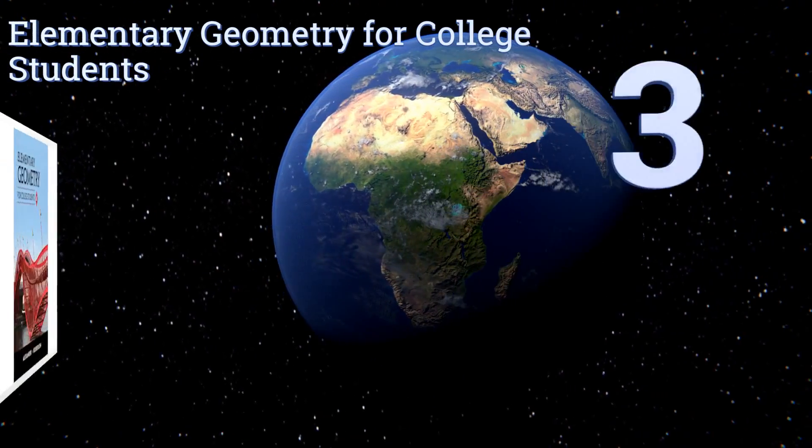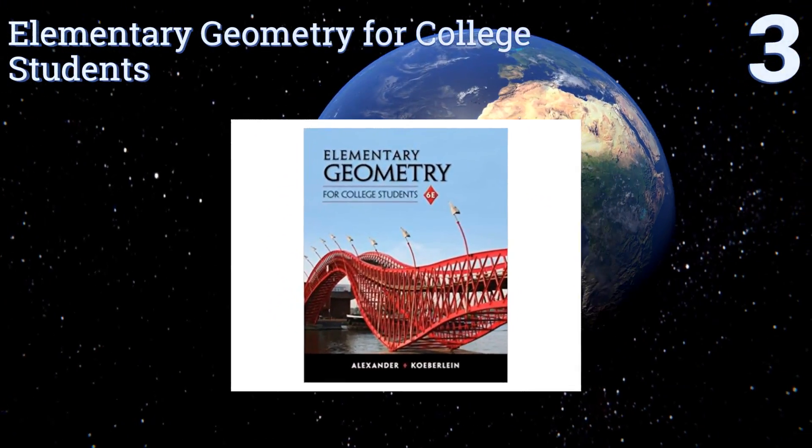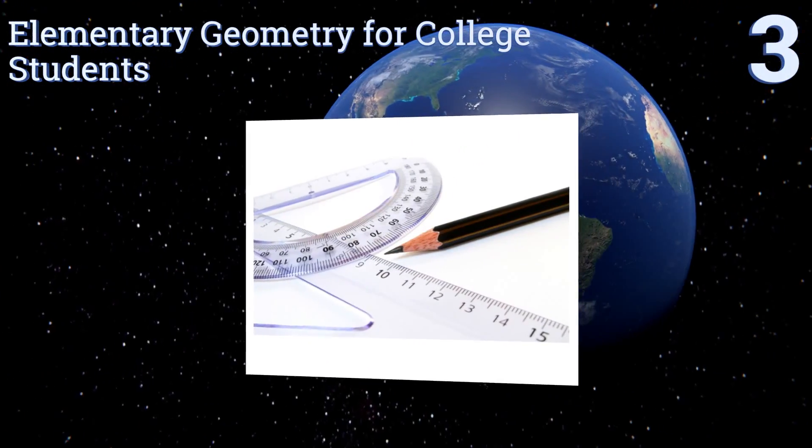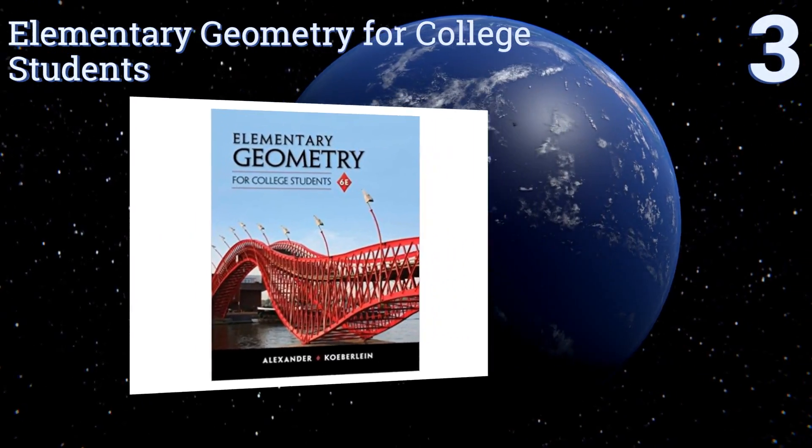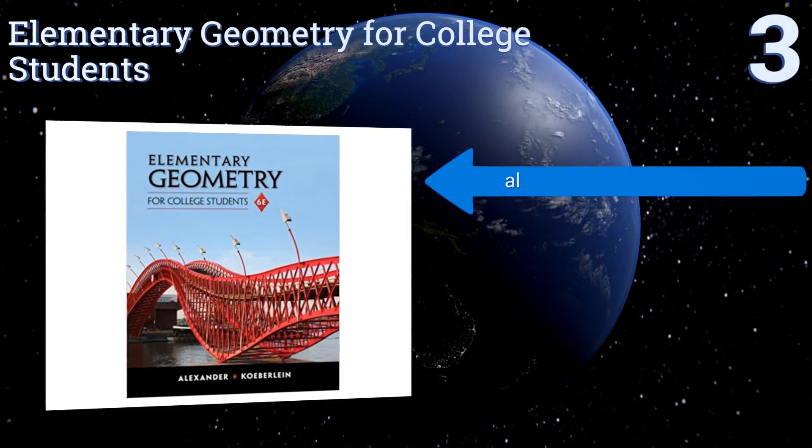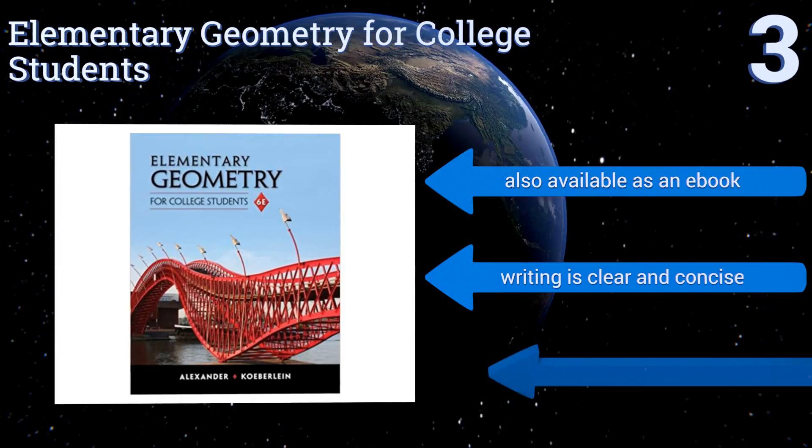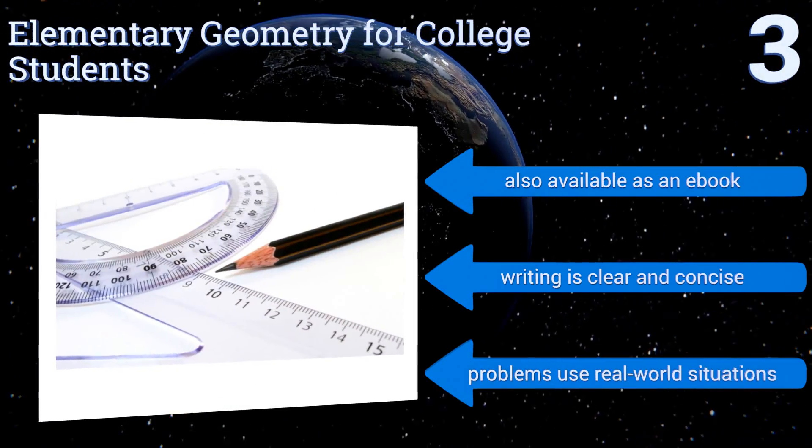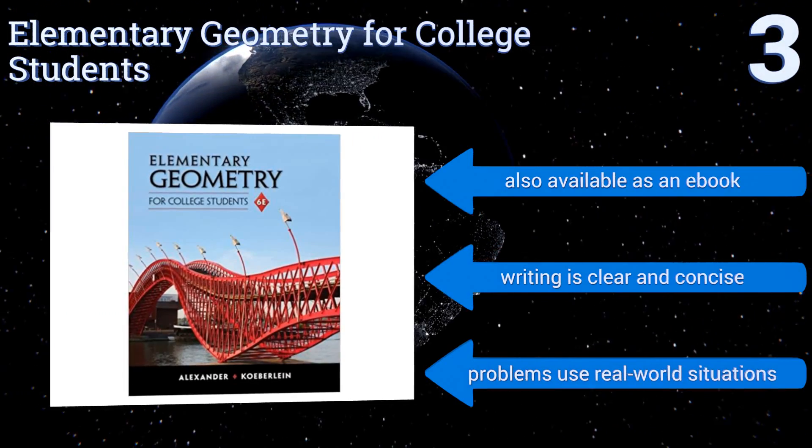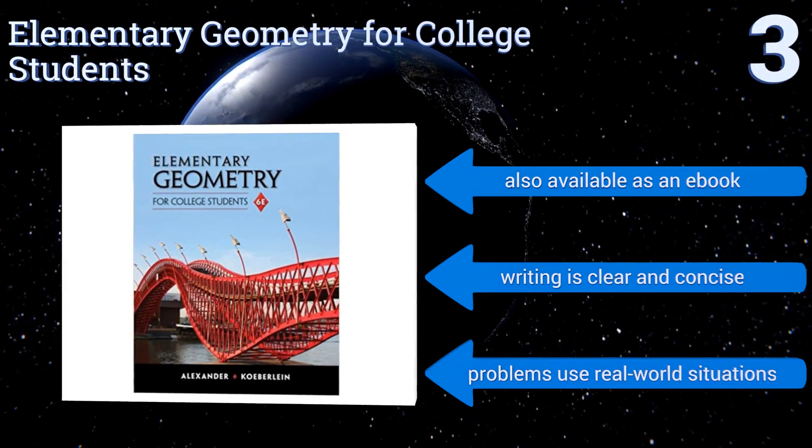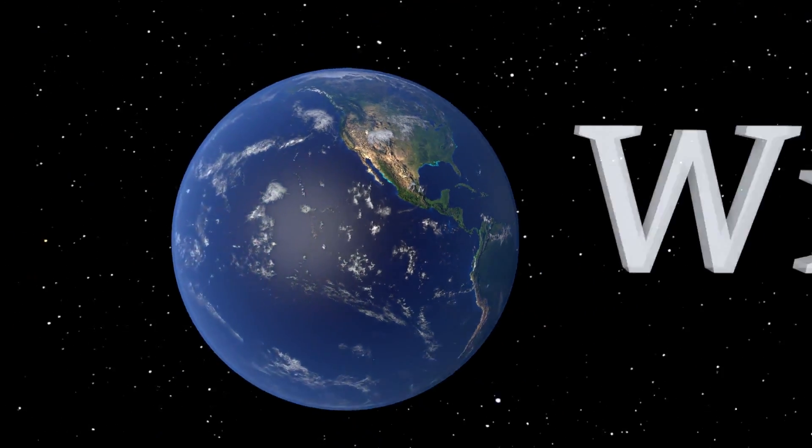Nearing the top of our list at number 3, for a more advanced look at the subject that won't leave you stumped, Elementary Geometry for College Students provides a solid background in the vocabulary of the material. This is an excellent choice for anyone who didn't get a good feel for the matter in high school. It's also available as an ebook and the writing is clear and concise. Its problems use real-world situations.